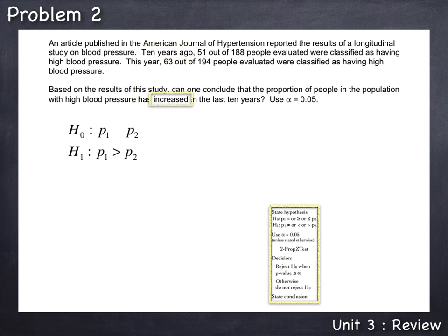This problem can also be done by reversing the populations — making 10 years ago your first population and this year your second. But in that case, you'd set up H1 as P1 less than P2 to still show that it has increased over those 10 years. In this problem, we'll let the first population be this year, the second population be 10 years ago, and set up the increased question as P1 greater than P2.